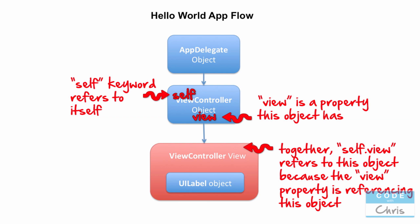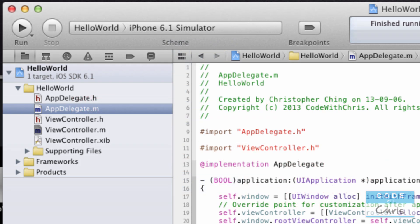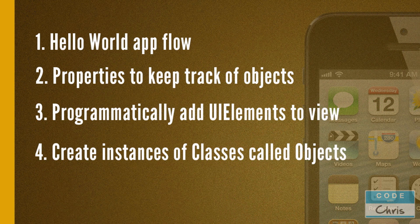I hope that wasn't too confusing, but if it was, don't worry — we're going to do a lot of object creation and work with variables and methods. So let's do a recap of what we went through today. We talked about how the app flows in our hello world demo: starting with the app delegate, it creates a view controller object with a reference to it; the view controller turns the xib file into a view object and assigns it to itself; and then we put a label on the view from the view controller. We also introduced the concept of properties, how to programmatically add UI elements to the view, and how to create instances of classes called objects.